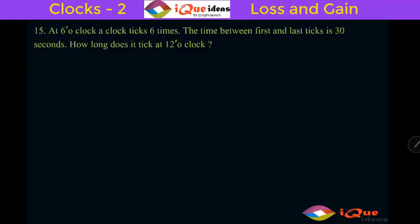Let's take up one question on this. Let's say this question says 15th one at 6 o'clock. A clock ticks 6 times. The time between the first and the last tick is 30 seconds.